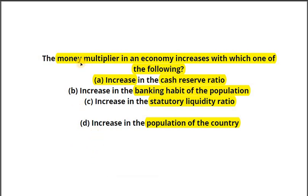The English term 'money multiplier' is quite self-explanatory — something is multiplying the money; money is getting doubled or tripled. So which of these options can increase the money multiplier? Let's say you have 100 rupees and you are told to keep 20 rupees as reserve, meaning you cannot lend those 20 rupees to anybody. Statement one is increase in the cash reserve ratio. Reserve means money kept idle, so only 80 rupees would be available for lending. Increasing CRR would not act as a money multiplier.